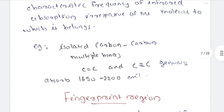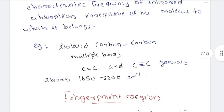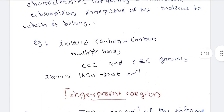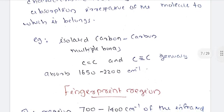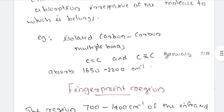I am going to give the example of isolated carbon-carbon bonds: carbon-carbon double bond and triple bond. These two bonds are different. Carbon-carbon double bond is 1,650 cm⁻¹ and triple bond is 2,200 cm⁻¹.